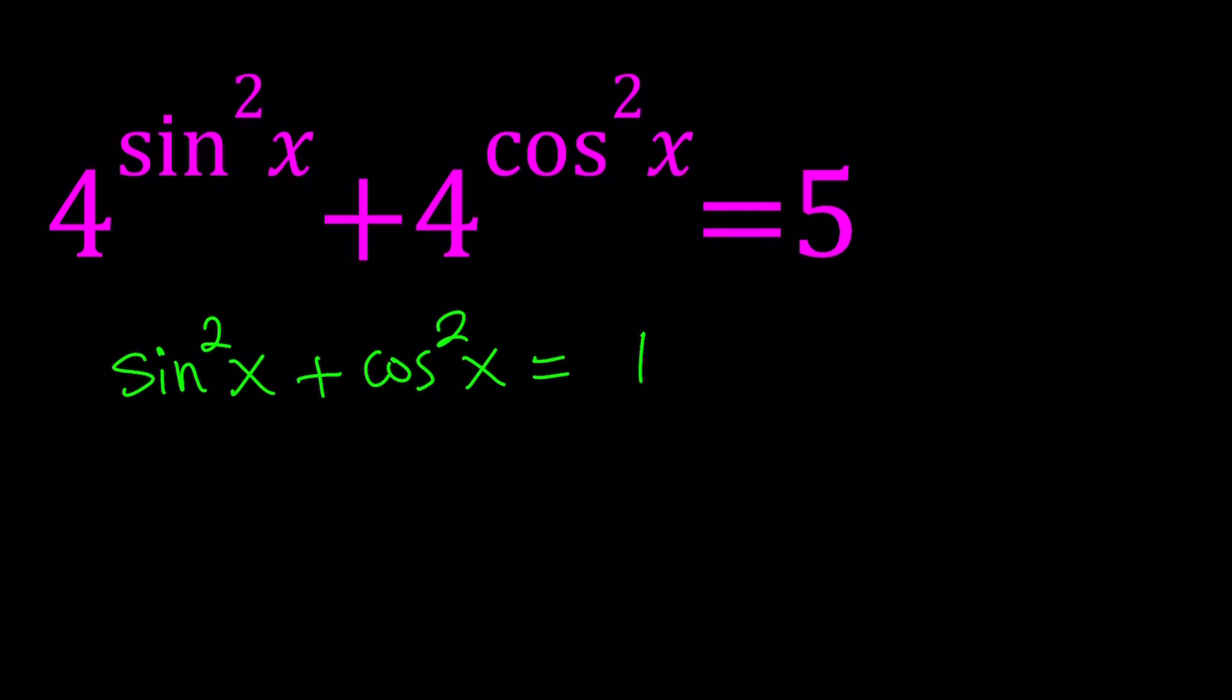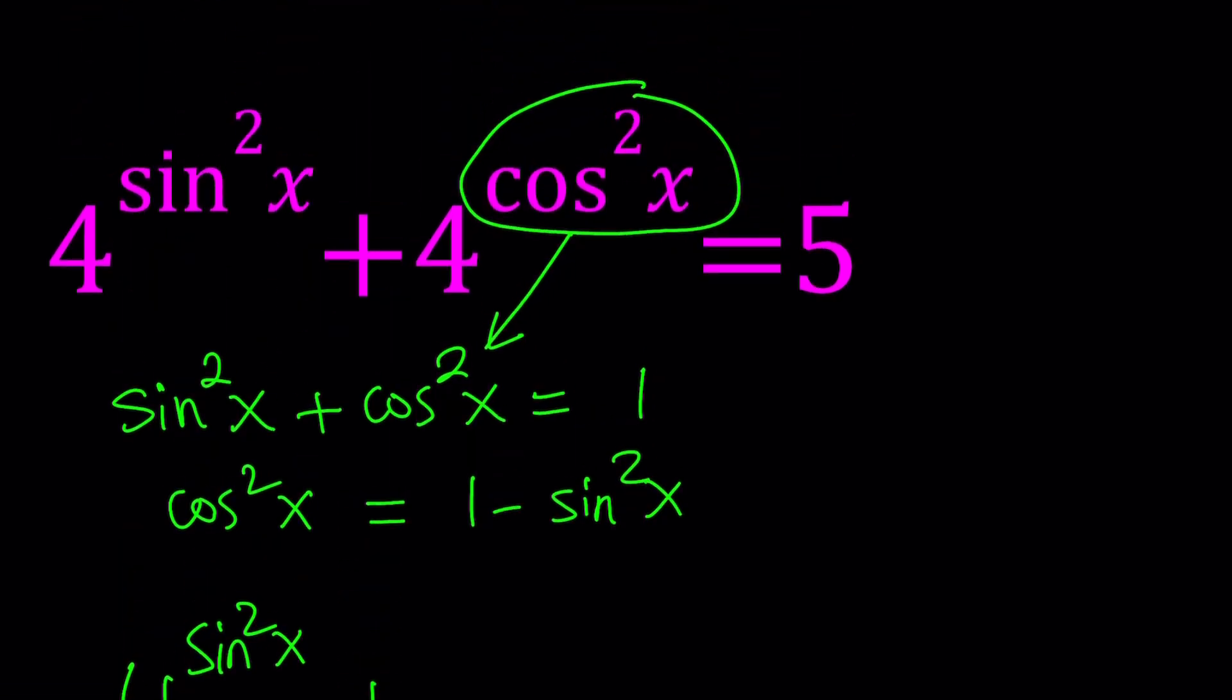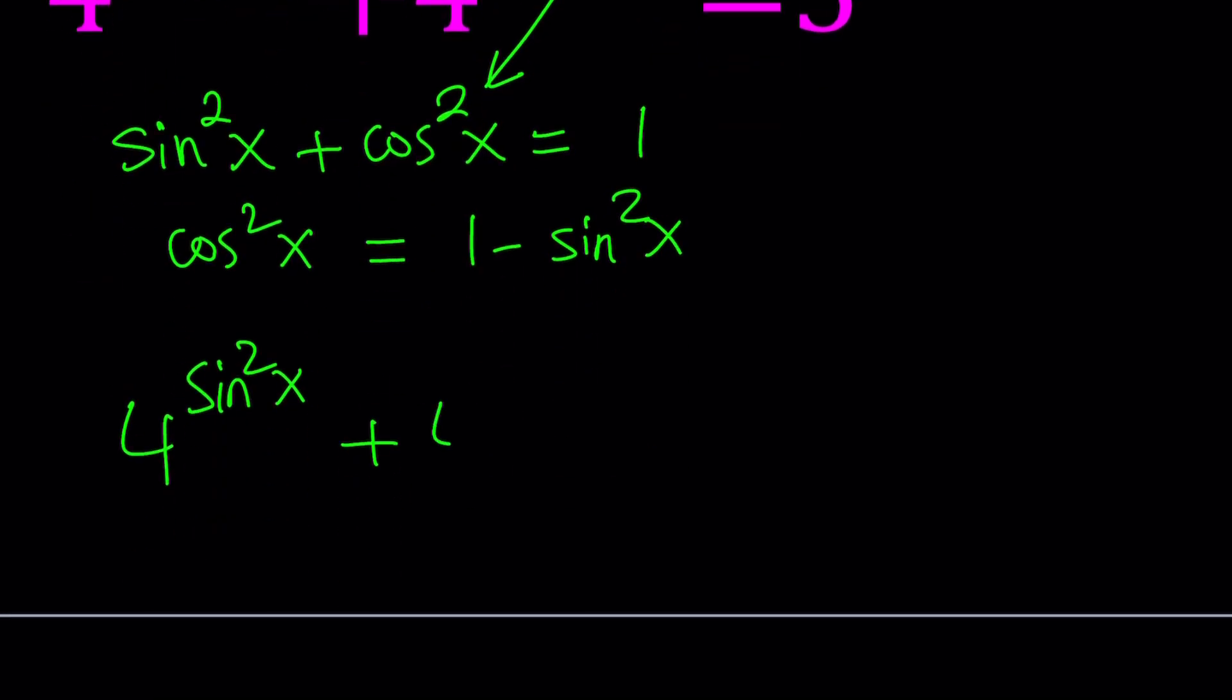Since I have this identity, I'm able to just replace one of these with the other. So let's go ahead and do with cosine squared x. Let's isolate cosine squared x from the identity. So subtract sine squared. You can write cosine squared as 1 minus sine squared. And then just substitute that. 4 to the power sine squared x plus 4 to the power 1 minus sine squared x.